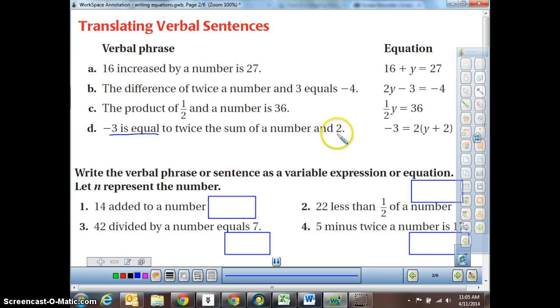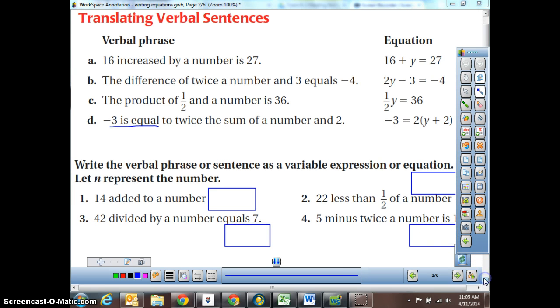Twice the sum of a number and 2. So the sum of a number and 2, that means a number plus 2. That whole answer times 2. So we have to put our parentheses in and number plus 2 times 2 is equal to a negative 3. Let's go ahead and see if we can figure some of these out here on our own.